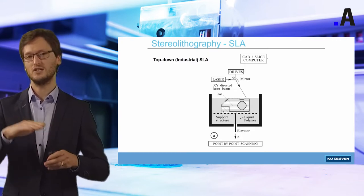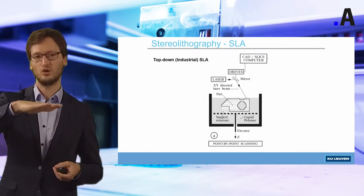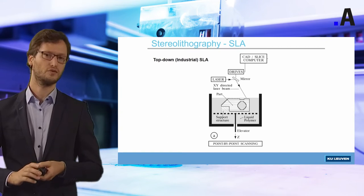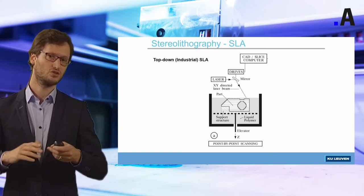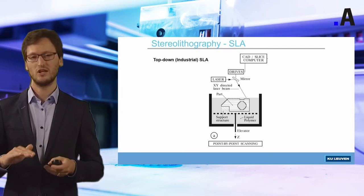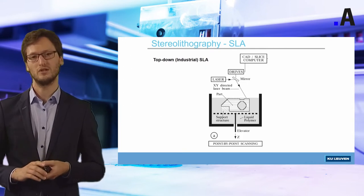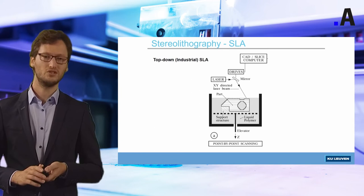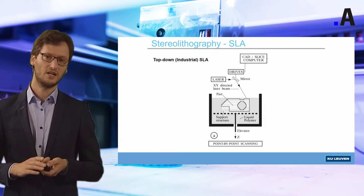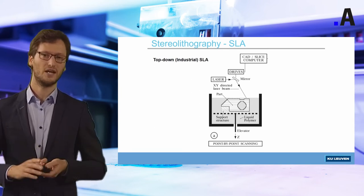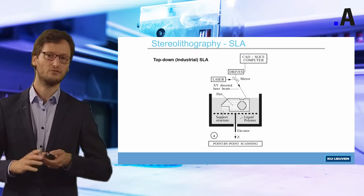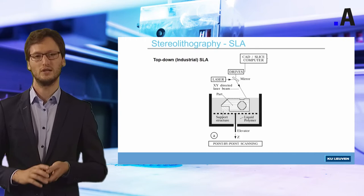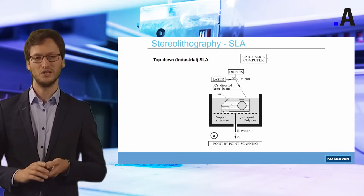When the laser energy interacts with the liquid, the liquid will solidify and create a solid part. Once a solid layer is created, the platform will lower just a little bit so that new resin can form on top of the printed layer and the process can repeat itself. Step by step, complex 3-dimensional models can be created. There are two processing principles. What you can see on this slide is where we have the resin in a vat and the laser from the top — this is called top-down or industrial stereolithography.